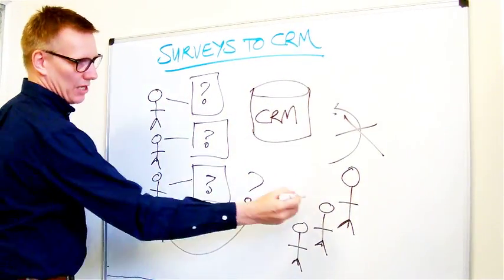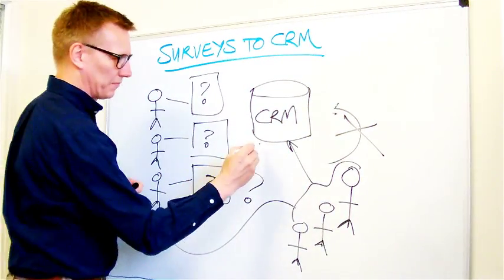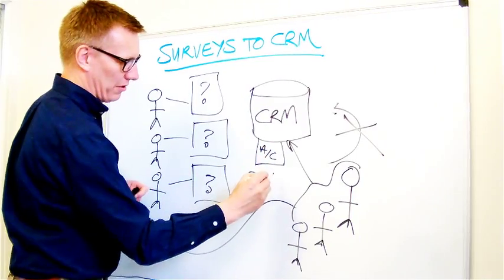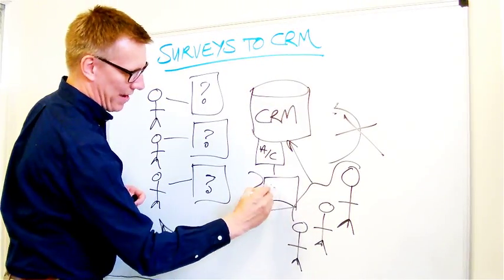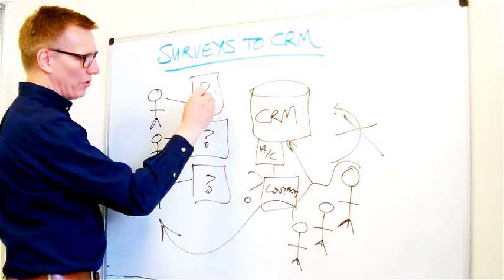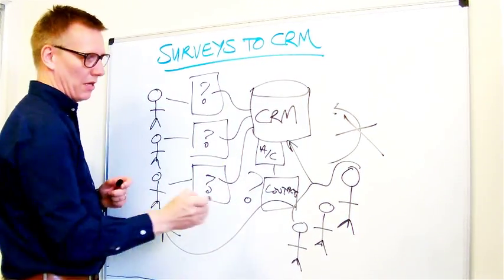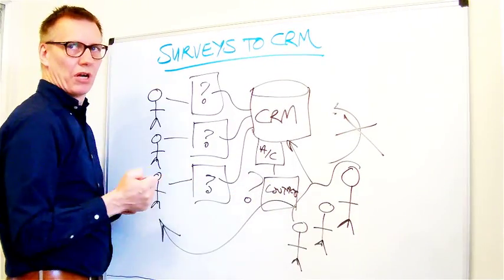And these people here have access to our CRM system. They can see information about accounts, they can see information about contacts in the account. So if we put the answers to our surveys into our CRM system, link them to our accounts, and link them to our contacts,